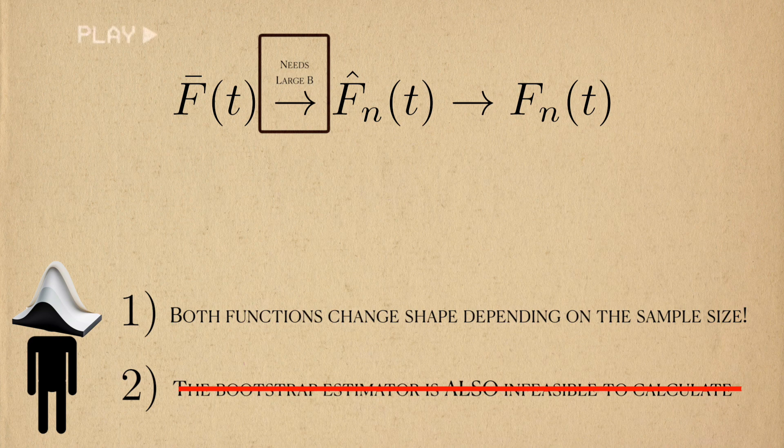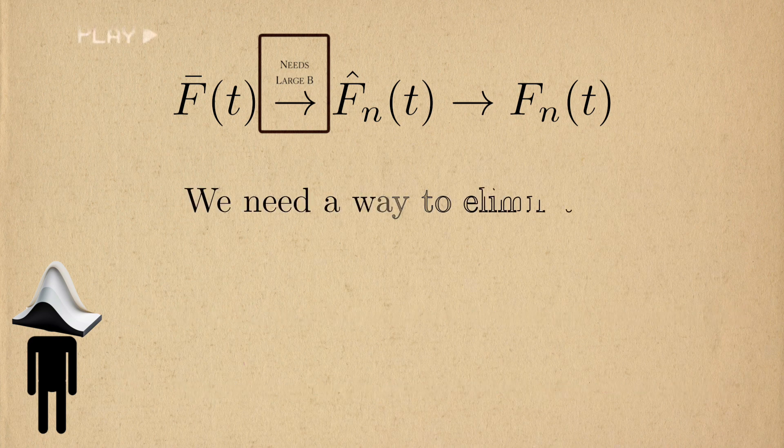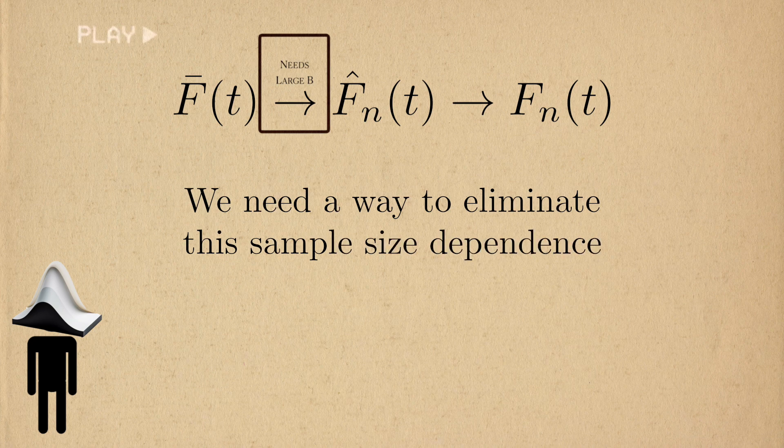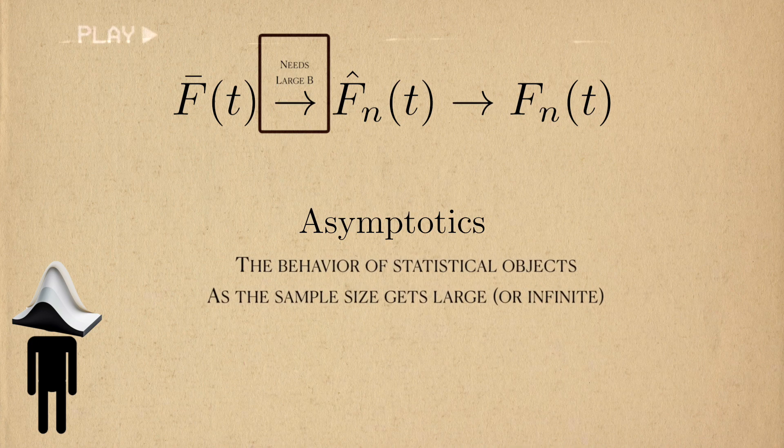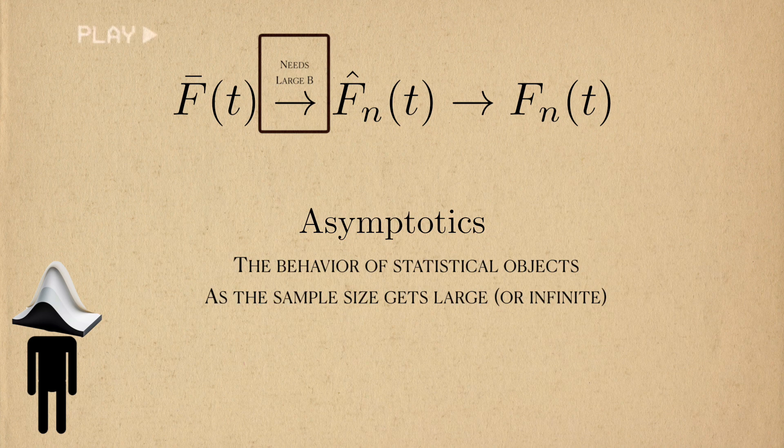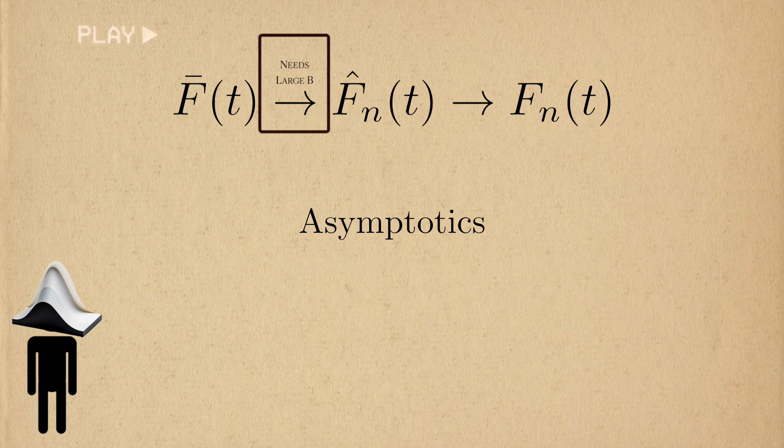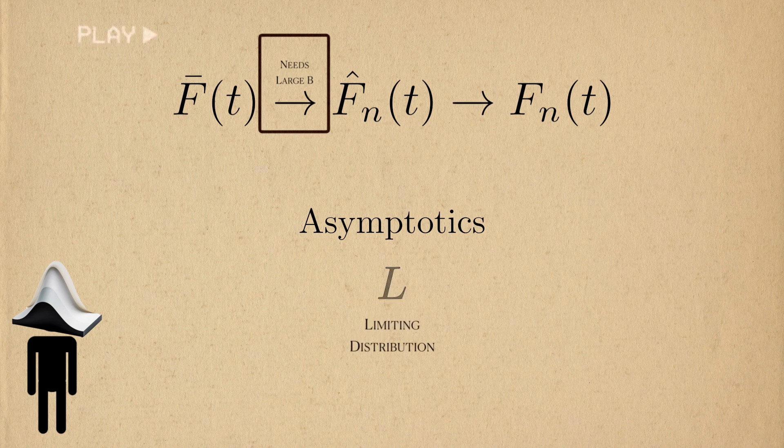But we still have the thorny issue of the sampling distribution's dependence on the sample size. If we could somehow remove this dependence on sample size for both of these distributions, that would be great. One way that we can move away from this dependence is to turn to asymptotics. Make sure your sample size is infinite or so big that your sampling distributions turn into limiting distributions. We'll denote this limiting distribution as L.